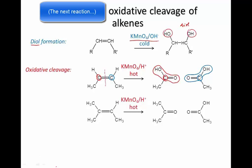Let's look at another example. Here we've got 2-methylbutene. The extra methyl substituent has an important effect on this reaction. When the double bond is cleaved, the carbon in the left-hand fragment is not an end carbon but instead a middle carbon, so it cannot become a carboxylic acid. Instead, it's oxidized to a ketone. The right-hand fragment, in this case, again becomes a carboxylic acid.